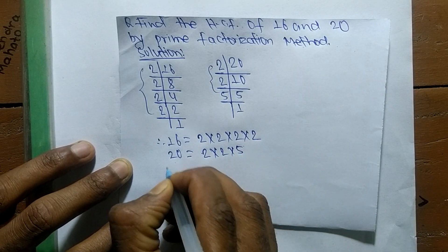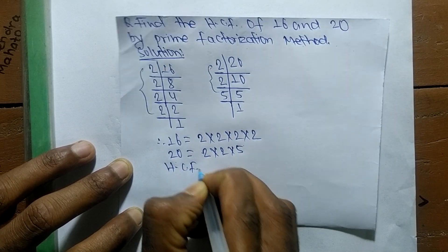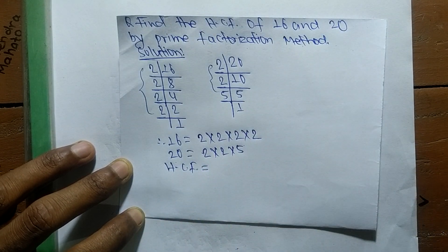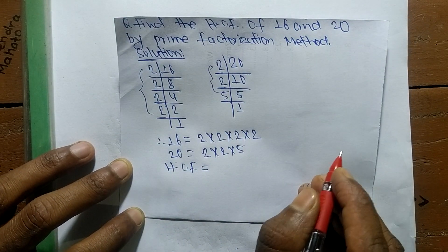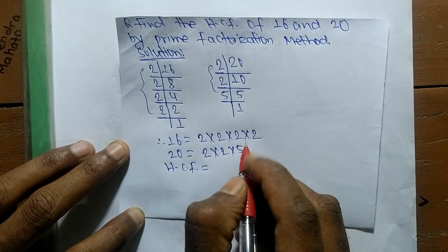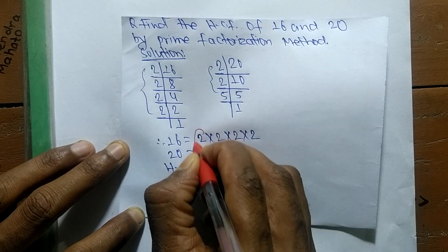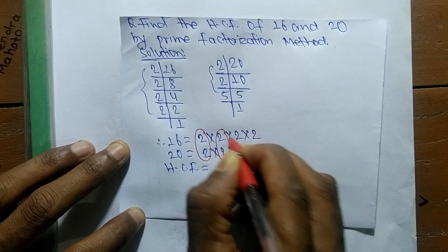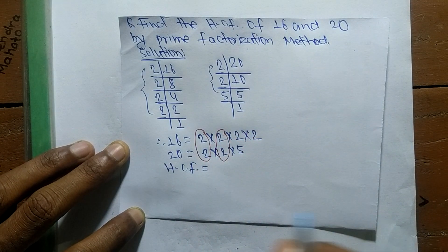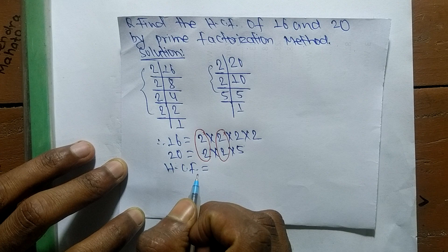Now to find the HCF, we have to find out the common factors in all these prime factors. The first common factor is 2 and the second one is also 2. HCF is the product of all the common factors.